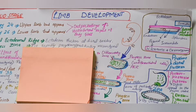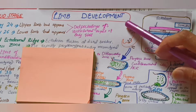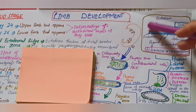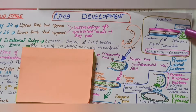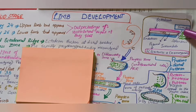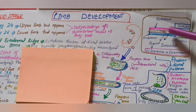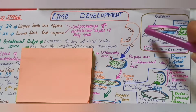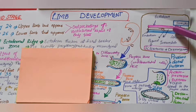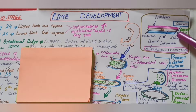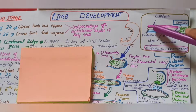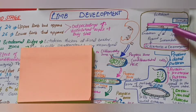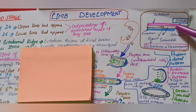Assalamu alaikum. Today we are going to discuss the development of limbs in embryology. As we know, during embryological development there are three germ layers that form during the third week of development. One layer is ectoderm, the underlying layer is endoderm, and in between endoderm and ectoderm there is mesoderm. Mesoderm is split into three parts: the paraxial mesoderm, the intermediate mesoderm, and the lateral plate mesoderm.